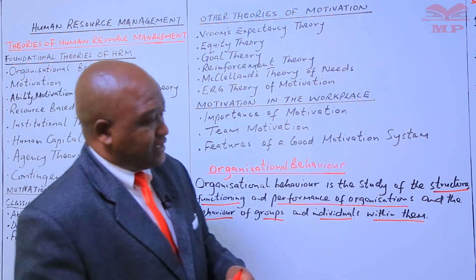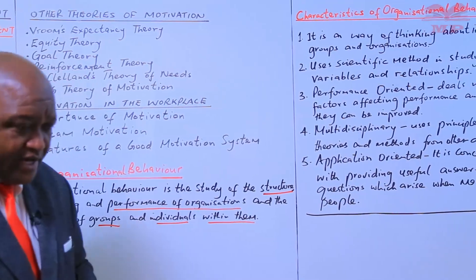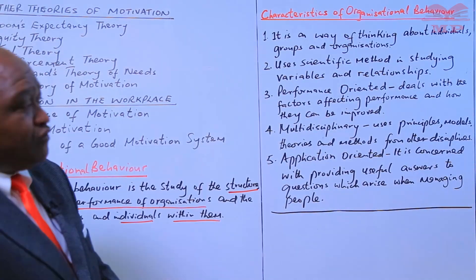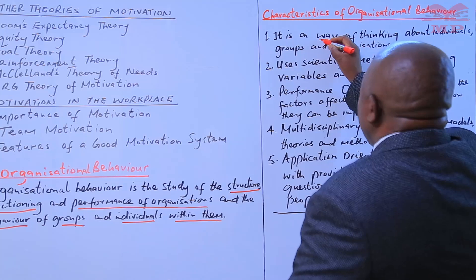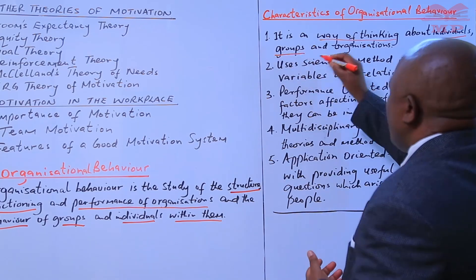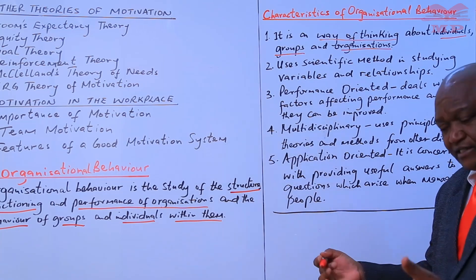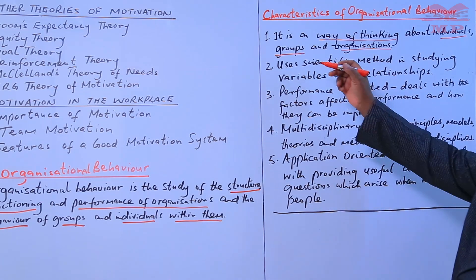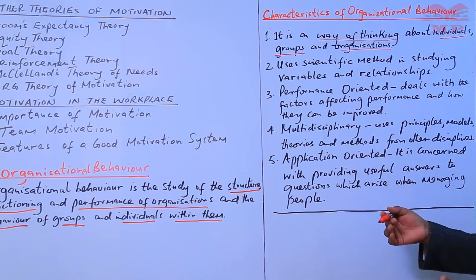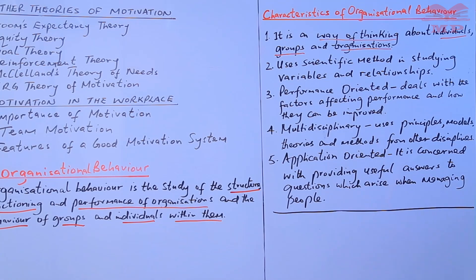Let us look at the characteristics of organizational behavior. First, organizational behavior is a way of thinking about individuals, groups, and organizations. It asks why some organizations perform better than others within the same environment, and how groups behave over a period of time. A way of thinking and examining how organizations behave is a key characteristic of organizational behavior.